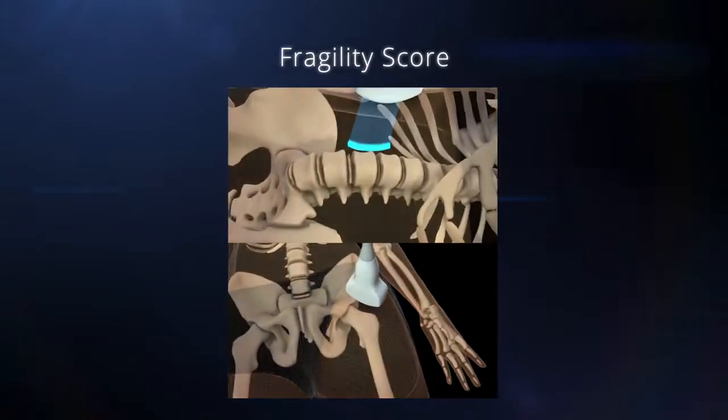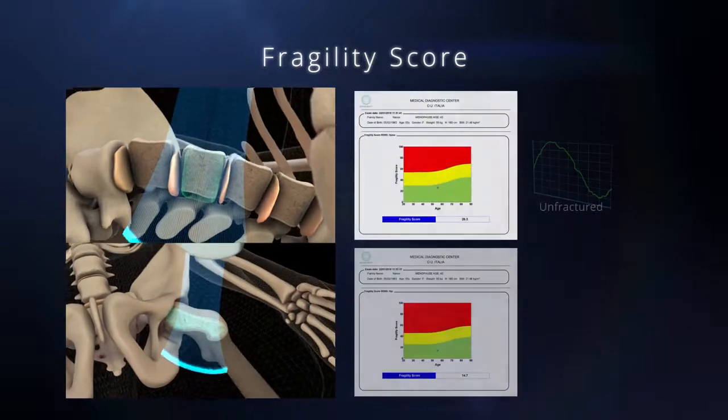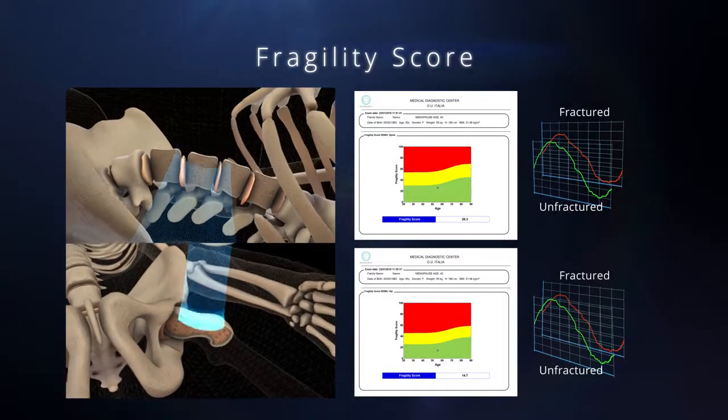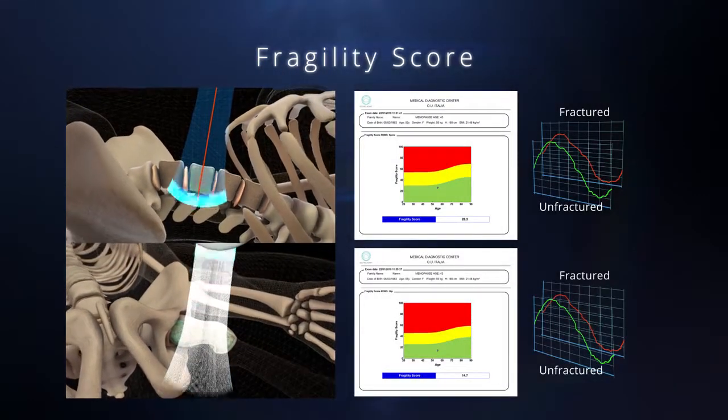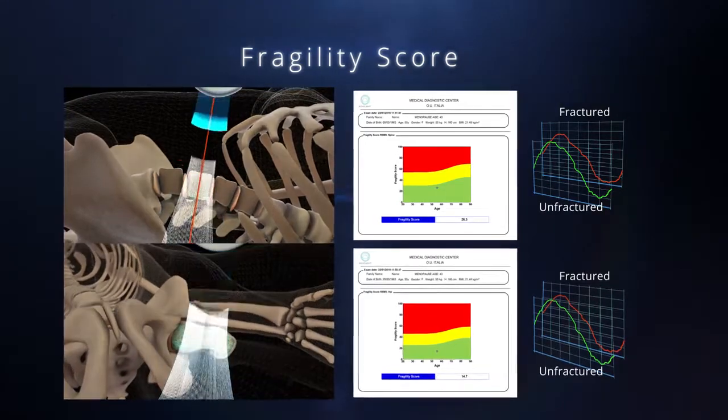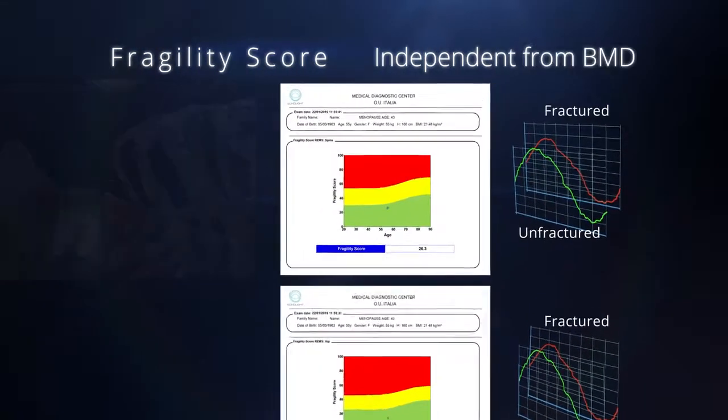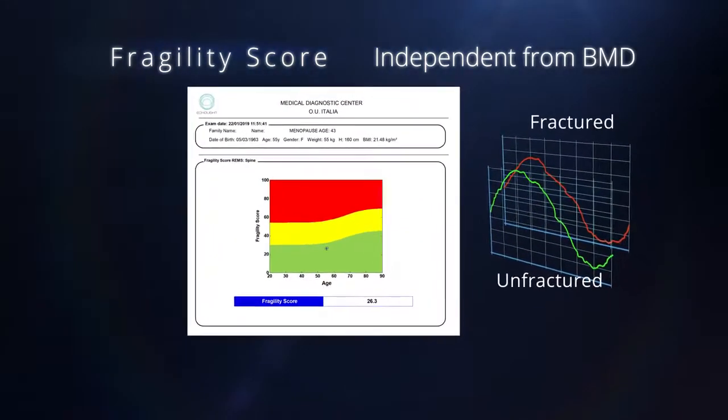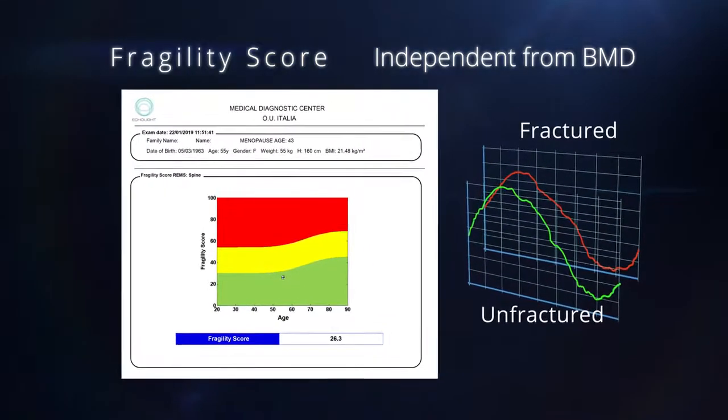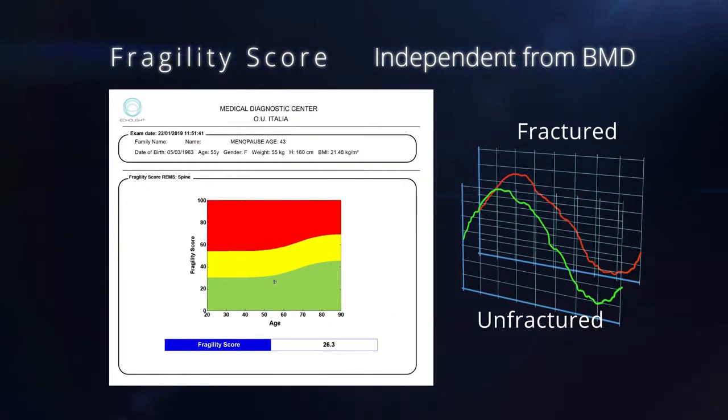During both the femoral and the lumbar ecographic scan, REMS also allows to measure an innovative parameter, the fragility score, which automatically assesses bone fragility and the risk of fracture on the basis of a comparison with reference spectral models developed from patients with and without fractures.